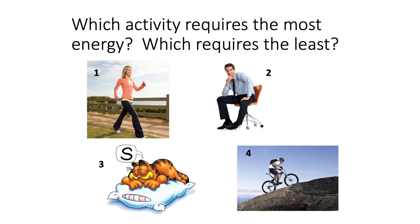Think quickly: which activity requires the most energy and which requires the least? You can probably guess that the least energy would be sleeping, and the most would be mountain biking up a hill. So the order is probably: sleeping, sitting, walking, mountain biking.